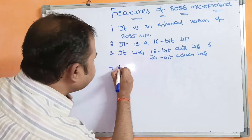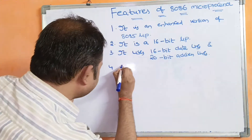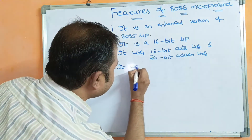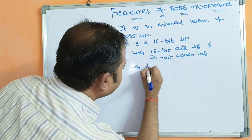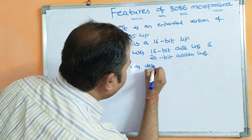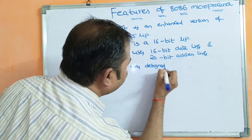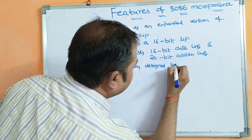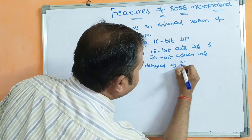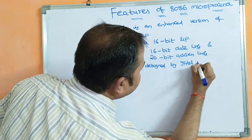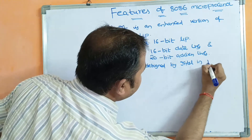The 8086 microprocessor was designed by Intel company in 1976.